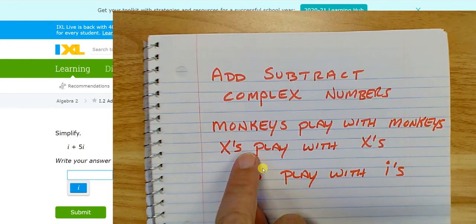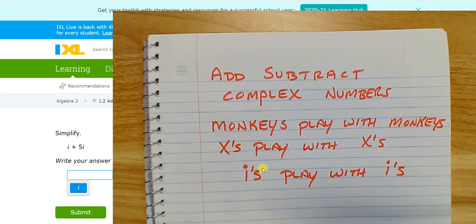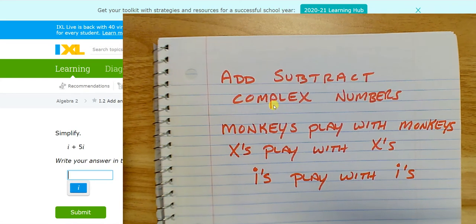So I can only add i's with other i's, and I can add just constant terms with constant terms. So let's take a look at how this works out when we're doing this.